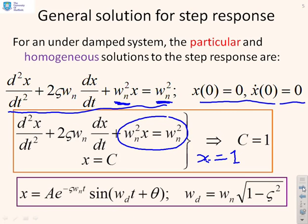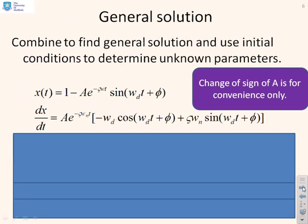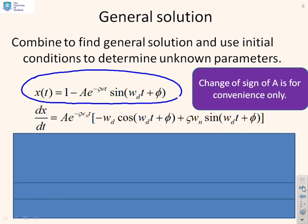The dynamic part is going to have an exponential e^(−ζωnt) — that's the real part of the pole — multiplied by sin(ωdt + φ), where ωd = ωn√(1 − ζ²). Putting those two bits together gives the overall solution. Note that for convenience of the algebra that follows, a minus sign has been introduced, but any sign changes will be absorbed in the solution for a.